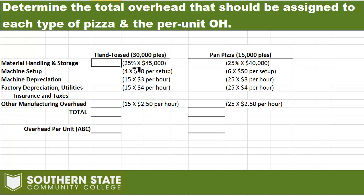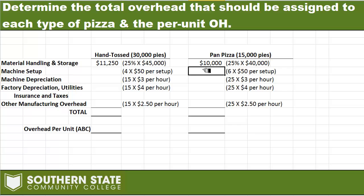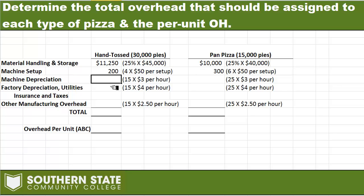For material handling, we had a 25% pool rate. We used $45,000 of raw material for hand-tossed and $40,000 for pan pizza, so I multiply 25% by each of those amounts. For machine setup, we ran 4 setups for hand-tossed and 6 for pan pizza, with a pool cost of $50 per setup — giving us $200 for hand-tossed and $300 for pan. For machine depreciation, we ran 15 machine hours for hand-tossed and 25 for pan pizza at $3 per hour.